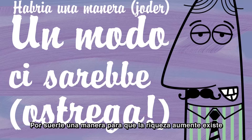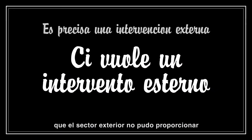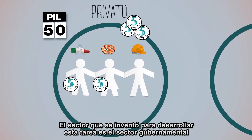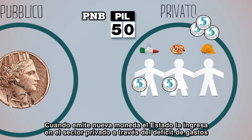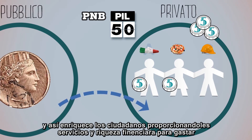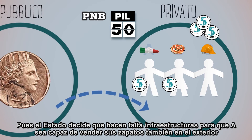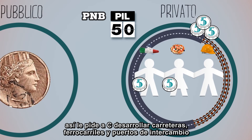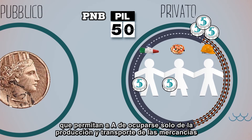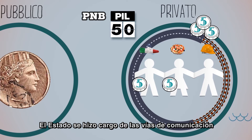Ma per fortuna il sistema per fare aumentare la ricchezza c'è. Per aumentare la ricchezza totale ci vuole per forza un intervento dall'esterno che il settore estero non ha saputo dare. Il settore che è stato inventato per svolgere questo compito è il settore governativo, perché è nato per poter stampare moneta per conto proprio. Quando stampa nuova moneta, lo Stato la riversa nel settore privato tramite la spesa a deficit ed arricchisce i cittadini fornendo loro servizi e ricchezza finanziaria da spendere. Infatti, lo Stato decide che ci vogliano delle infrastrutture in grado di far vendere le scarpe di A anche all'estero, e così chiede a C di creare strade, ferrovie e ponti di scambio che consentano ad A di occuparsi soltanto della produzione e del trasporto delle merci che, prodotte in maggior quantità, finalmente costano un po' meno. Alle vie di comunicazione ci ha pensato lo Stato.